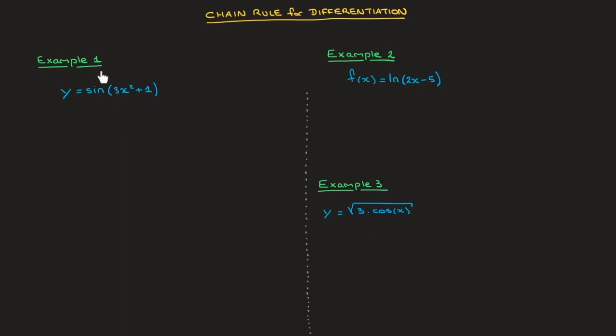Looking at this first example, we need to differentiate y which is equal to sine of 3x squared plus 1. We can see quite clearly that we're dealing with a composite function, and so to differentiate it, we use the chain rule.